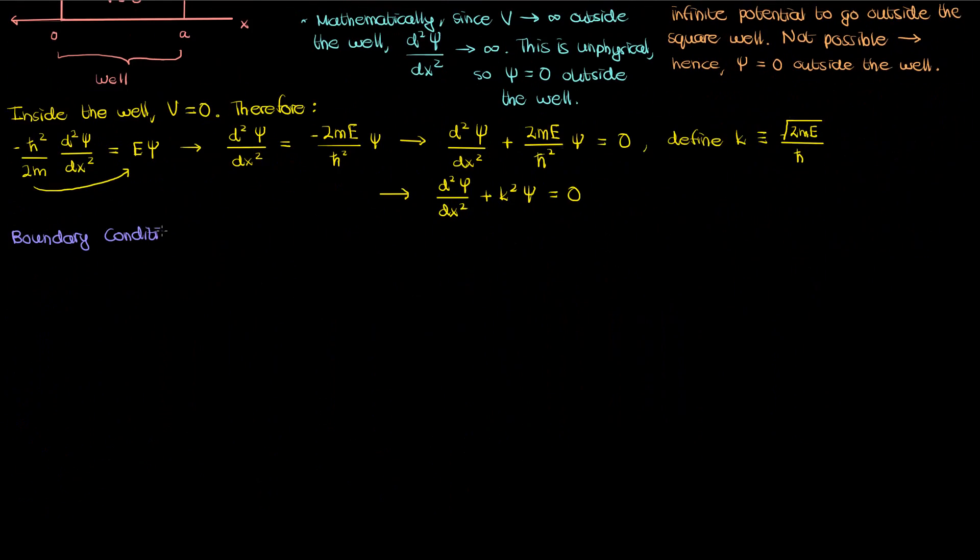Associated with the second order ODE or ordinary differential equation are two boundary conditions. But where do these boundary conditions come from? Well we just demonstrated that small psi is 0 outside the well, so right at the boundaries that separate the inside and outside we must have the small psi equals 0. Let me illustrate this.